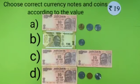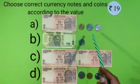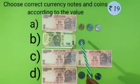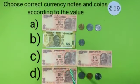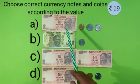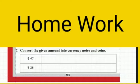Come on students, let's solve some related pairs. Choose the correct notes and coins according to the given value. Which option is correct from the options given below? Option A is 10 and 5 is 15, plus 2 is 17, plus 2 is 19. Option B is 20 and 1 is 21. Option C is 10 and 10 is 20. Option D is 10 and 2 is 12, plus 5 is 17, plus 1 is 18. According to the shown value, option A is correct, so we will put a tick on option A. Dear students, you will solve question number 7 given at page number 106 from your home.